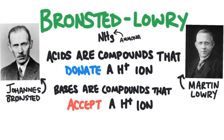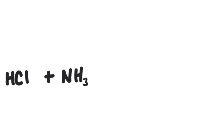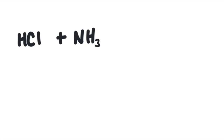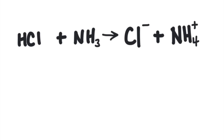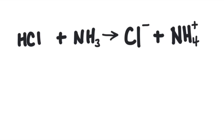They modified the definition to be broader and include these other bases. Acids are compounds that will donate a hydrogen ion to another compound, and bases are compounds that will accept that hydrogen ion. For example, HCl has an extra hydrogen ion that can be donated to ammonia, which can accept it. When HCl loses the hydrogen ion, it becomes a chloride ion, and ammonia becomes ammonium, NH₄⁺, with a positive charge — because hydrogen ions are positively charged.